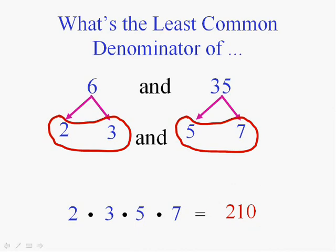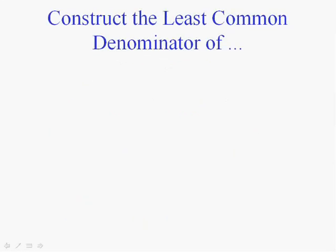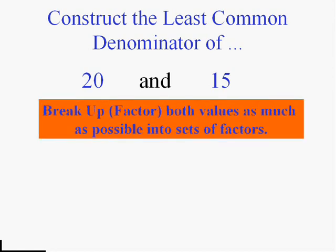Now that one didn't end up being very small, did it? Let's try and find a smaller least common denominator, hopefully, of 20 and 15. Note that the smaller they are, the easier they'll be to work with.